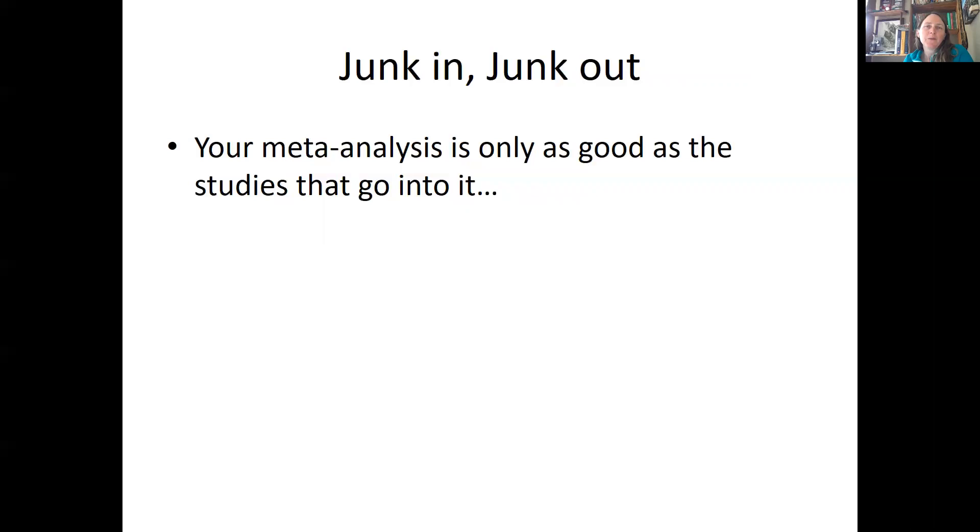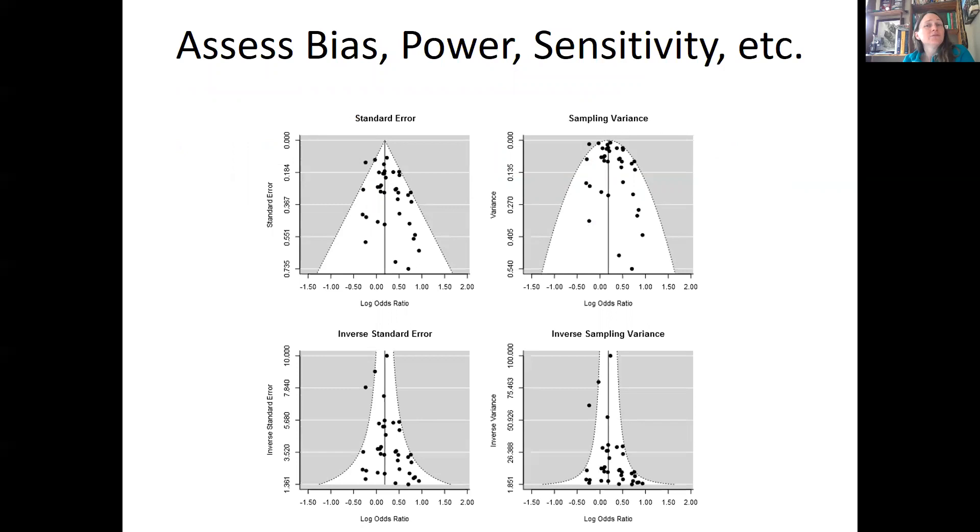A last thing to think about with meta-analysis is that your model, basically, if you put a bunch of junk in, you're going to get junk out. So the book talks a lot about crappy studies going in and then a crappy meta-analysis coming out. Your meta-analysis is only as good as the studies that go into it. So that's partly why having good criteria is really helpful.